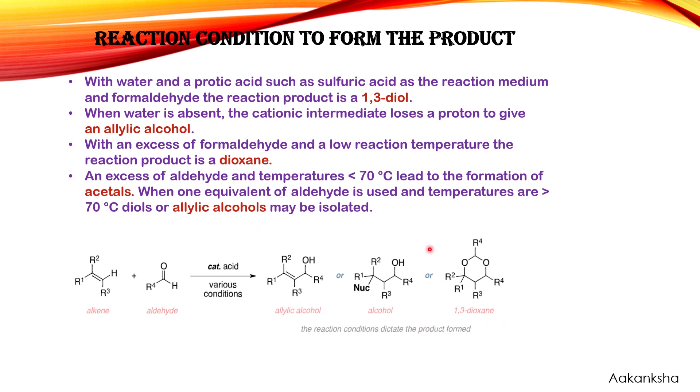When one equivalent of aldehyde is used and the temperature is greater than 70°C — at higher temperature — we get the allylic alcohol, while at lower temperature we get 1,3-dioxane. This is clear from the reaction conditions: how different products are formed. We have also seen the mechanism of the Prince reaction.